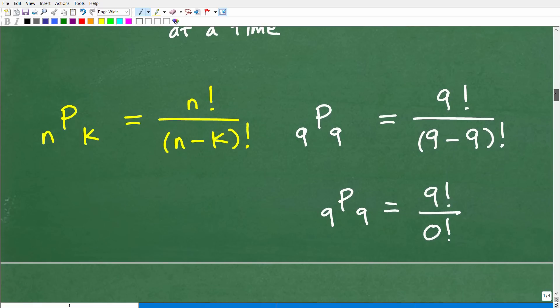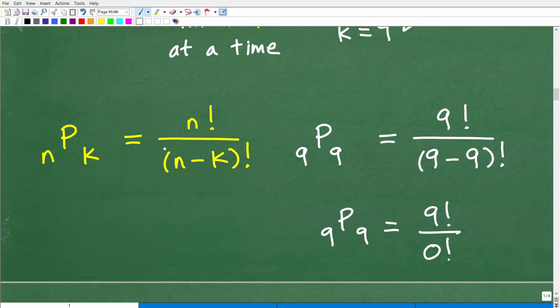So we need to plug this into this formula and work out this math. So here it is. nPk is equal to n factorial over n minus k factorial. So this is 9P9 is equal to n factorial. So that's nine factorial. Again, some of you are like, what is that factorial? I'm going to explain that in one second. So n minus k is going to be nine minus nine factorial. So this is all going to end up being nine factorial over zero factorial. This will tell us the answer.